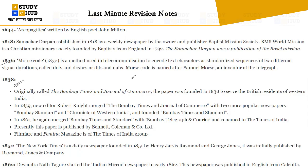In 1838, the Bombay Times and Journal of Commerce was founded to serve British residents of western India. In 1859, new editor Robert Knight merged the Bombay Times and Journal of Commerce with two more popular newspapers — Bombay Standard and Chronicle of Western India. In 1861, it was further merged and renamed to the Times of India.